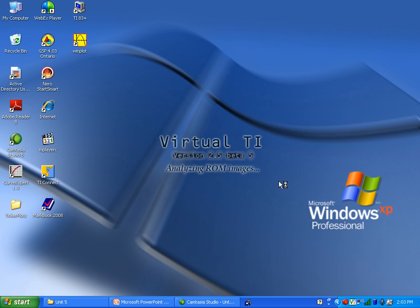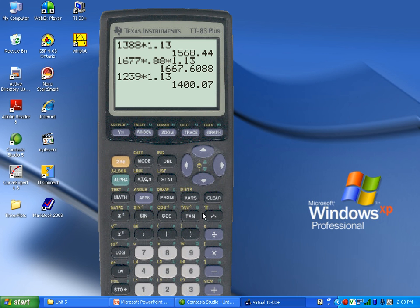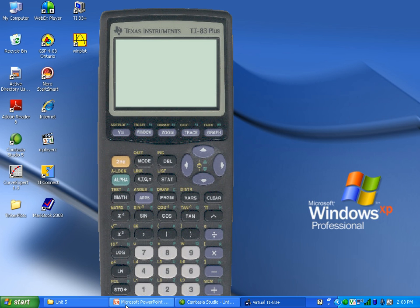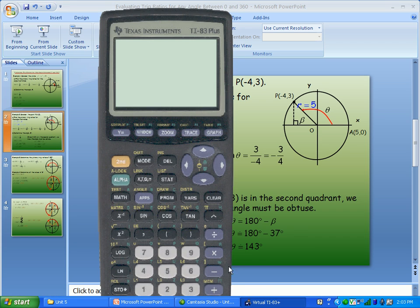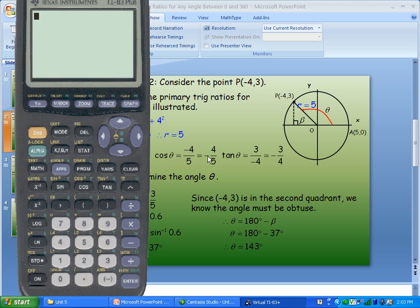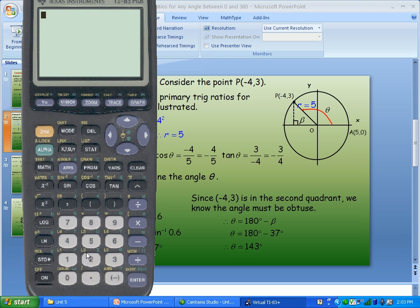If I open up my graphing calculator, and we will make sure it is in degree mode, it is. So, I am using this cosine. Cosine is negative 4 fifths. Now, so negative 4 fifths is negative 0.8. So if I take the inverse cosine of negative 0.8, the calculator does tell me right away that it is 143 degrees.